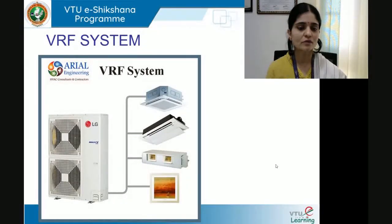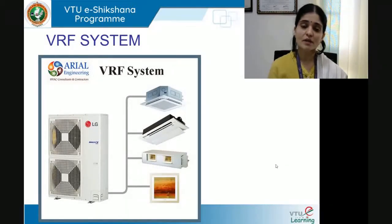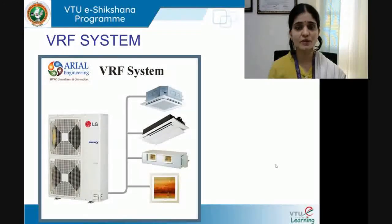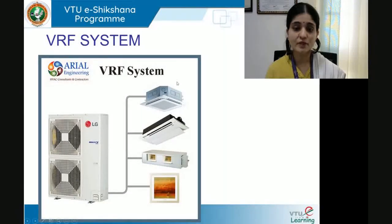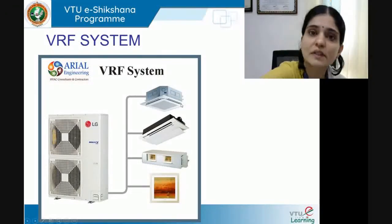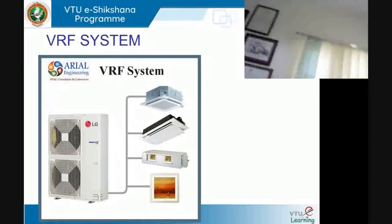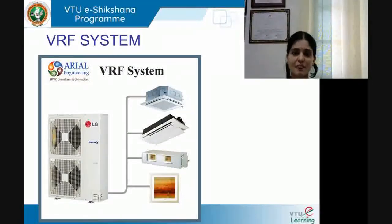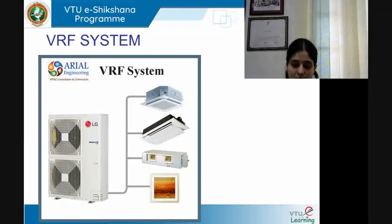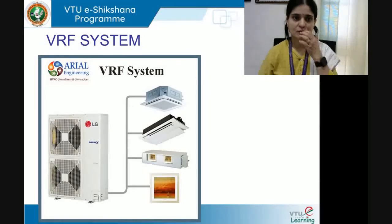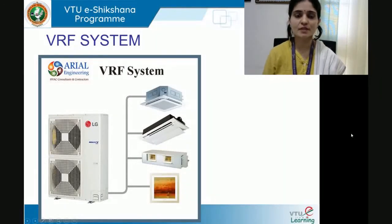One compressor-condenser unit can be connected to different types of terminal units. On the right side, you can see the ceiling cassette type at the top, which flushes with the false ceiling, then the wall-hung type and other different types. That is how a VRF system enables using different types of terminal units or evaporator coils within a single system.